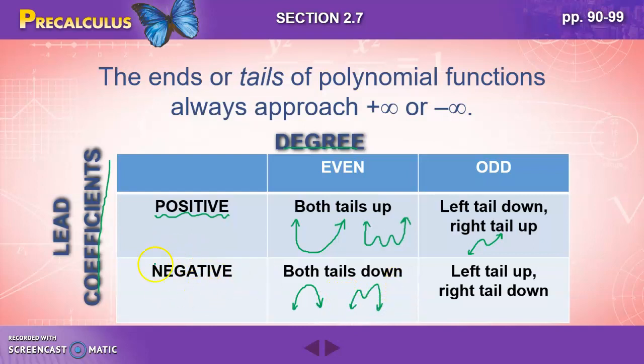If your leading coefficient is negative and the degree is odd, so negative x cubed, you'll have your left tail up and your right tail down. Again, if you look at the overall slope, you've got a negative coefficient, negative slope here. So hopefully that will help you remember that. This is a chart that you do need to know as you describe the behavior of polynomials.